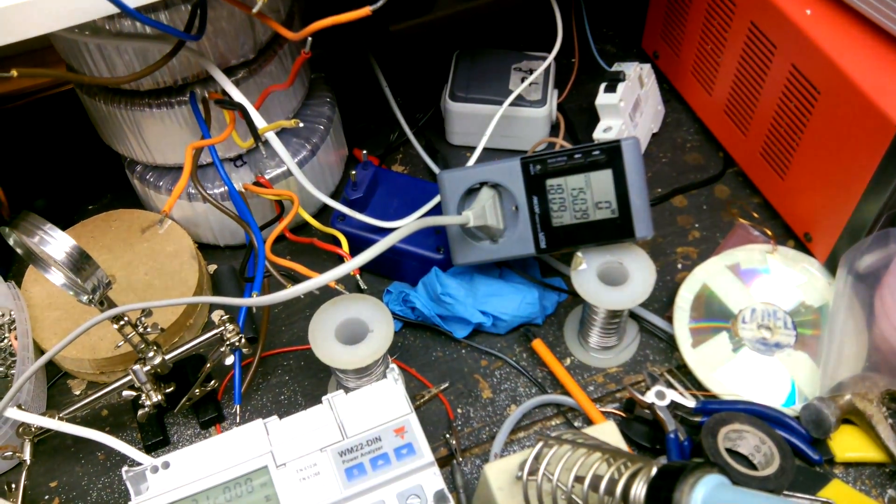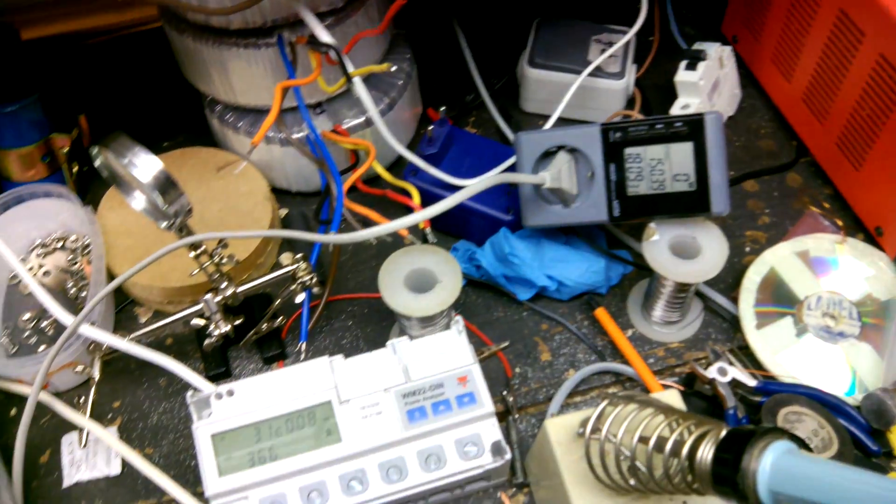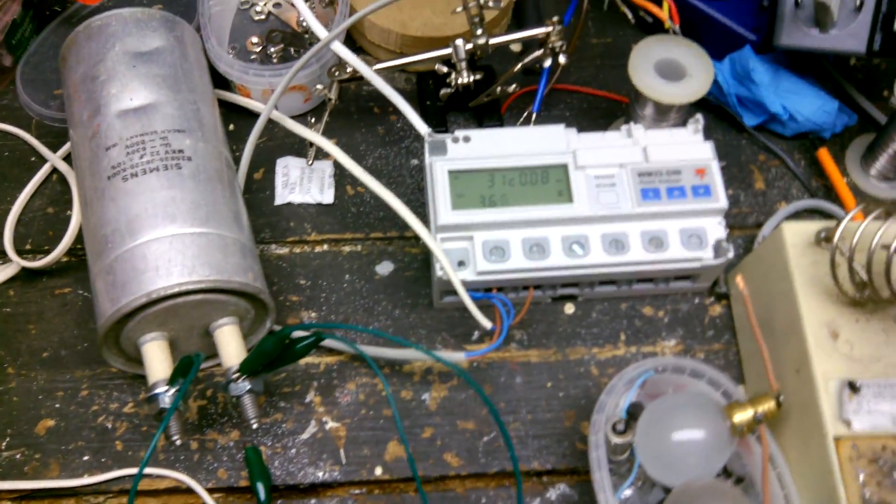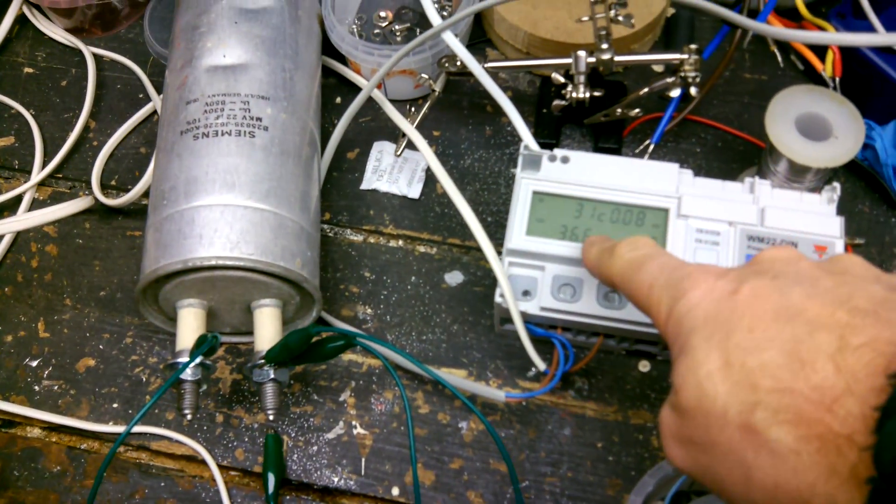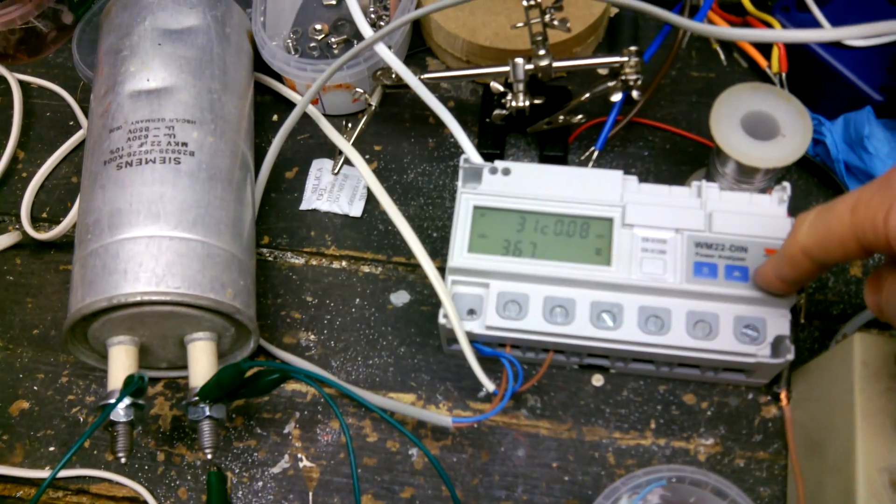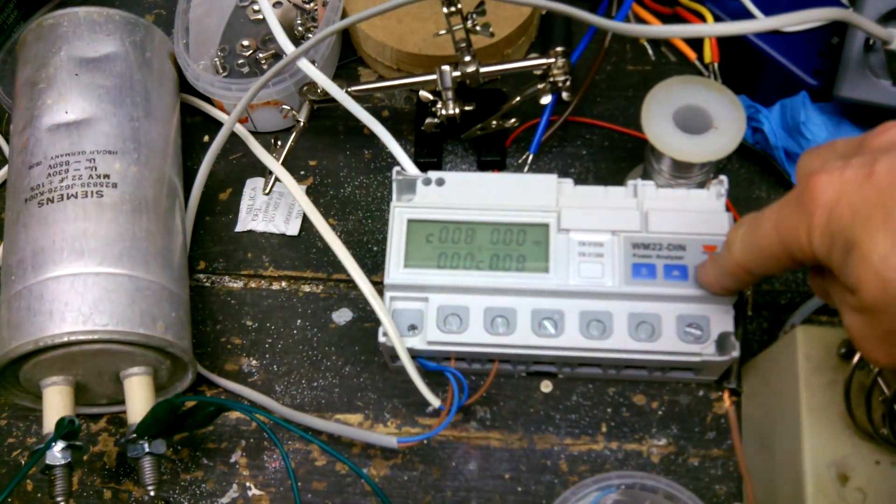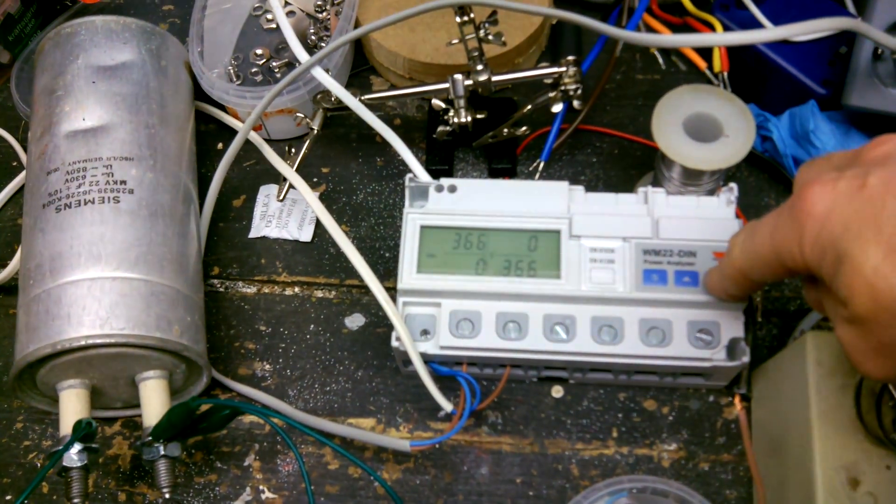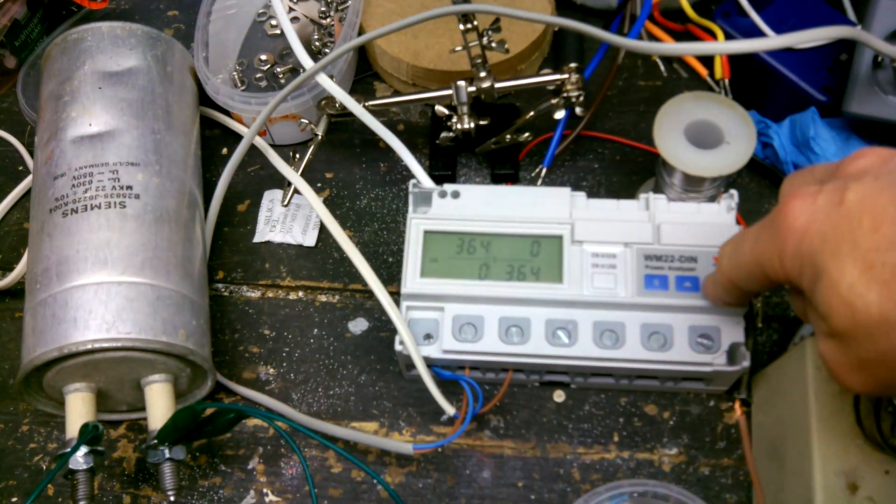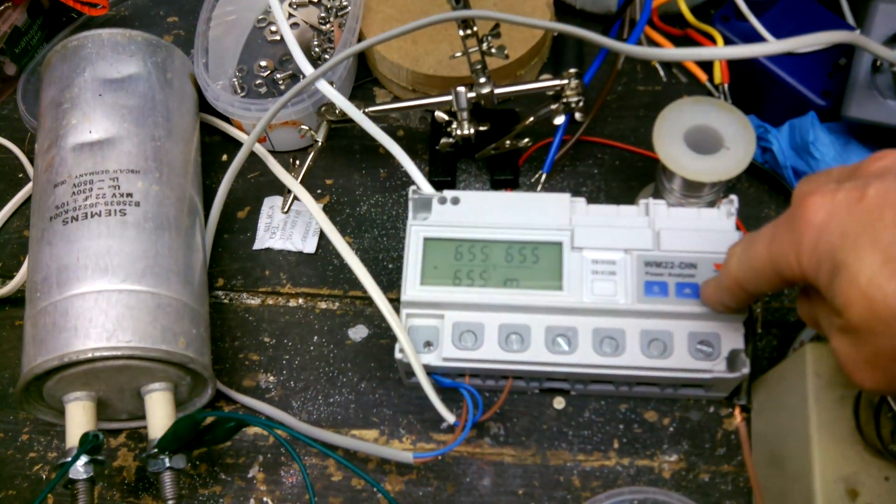Sometimes when it just started it goes up to 7 but then it goes down to 0. So I don't know about why this one is showing 31. We can go down in the menu and look at the amperage.